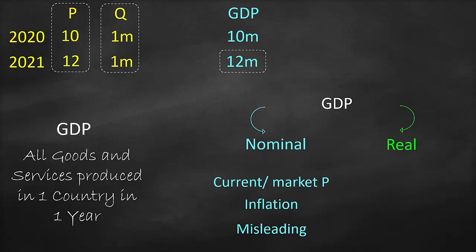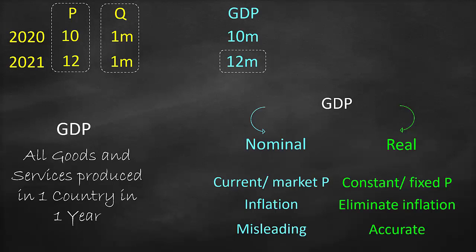So what do we mean by real GDP? We need to eliminate inflation. How are we going to eliminate inflation? We need to have constant or fixed prices. We go to a certain year and make it a base year, and with this base year we fix the price. Consequently, we eliminate inflation, and therefore this will be more accurate.